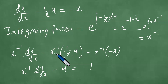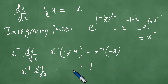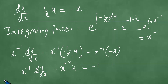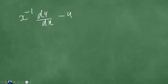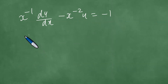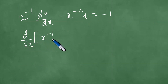This becomes x to the minus 2 times u, which equals minus 1. The left-hand side is recognized as the exact derivative: d/dx of x to the power minus 1 times u equals minus 1.